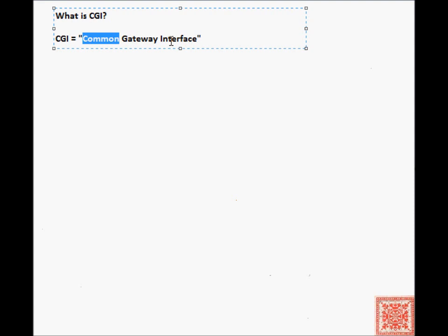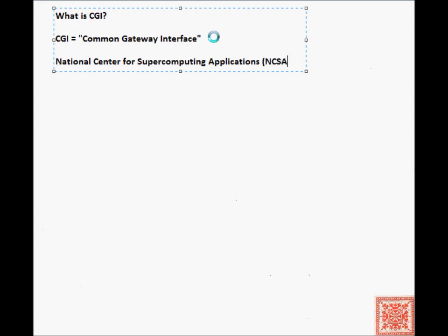So CGI is said to have been jointly developed by the National Center for Supercomputing Applications, so let's write it down, National Center for Supercomputing Applications, NCSA, at the University of Illinois at Urbana-Champaign. And the second developer was the CERN, the European Organization for Nuclear Research in the early 1990s, and the primary objective of CGI was dynamic content generation.